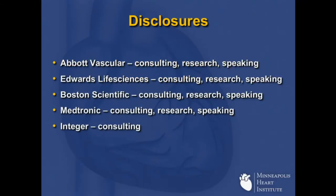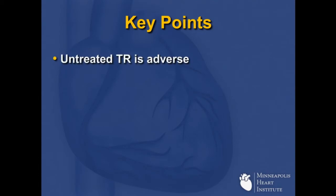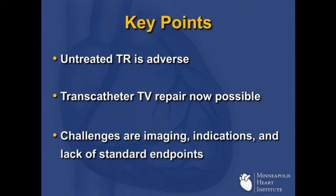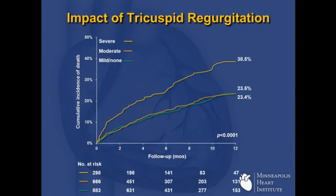In this talk I want to make a few key points. First, when we look at tricuspid valve regurgitation, we know it's adverse — when TR is left alone patients do more poorly than if the TR is treated. Transcatheter tricuspid valve repair is now possible. There are challenges: imaging, indications, and what exactly are the standard endpoints we should be using? For aortic and mitral we have a general sense, but for TR, how much reduction is needed still remains to be determined.